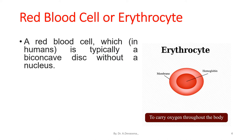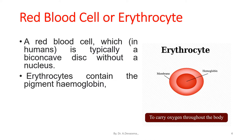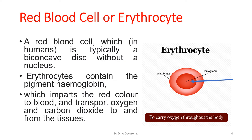A red blood cell, which in humans is typically a biconcave disc without a nucleus. These erythrocytes contain the pigment hemoglobin, which imparts the red color to blood and transports oxygen and carbon dioxide to and from the tissues. The main purpose of the red blood cell is to carry oxygen throughout the body.